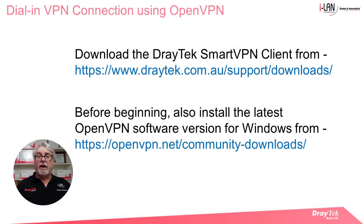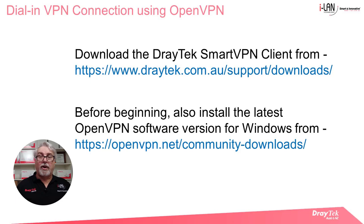Note that you will need to install OpenVPN Client version 2.4.84 for Windows 10 from openvpn.net/community-downloads, or you won't see the OpenVPN type as an option in the SmartVPN client.